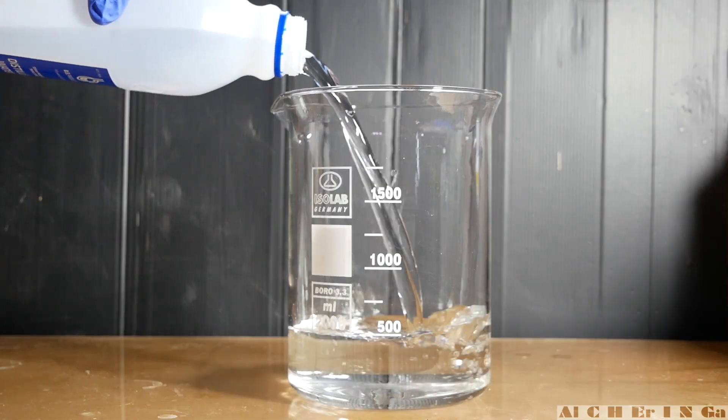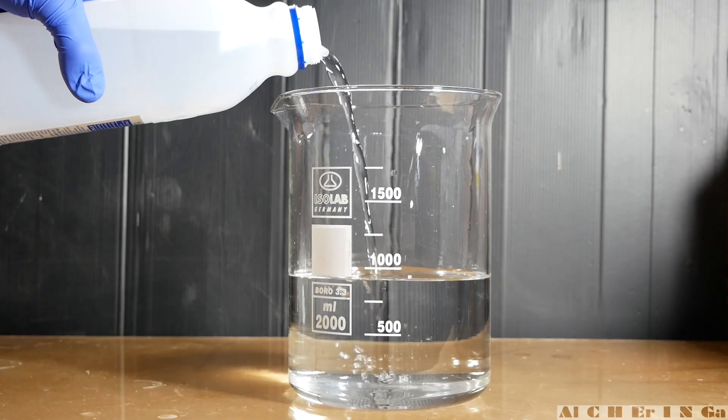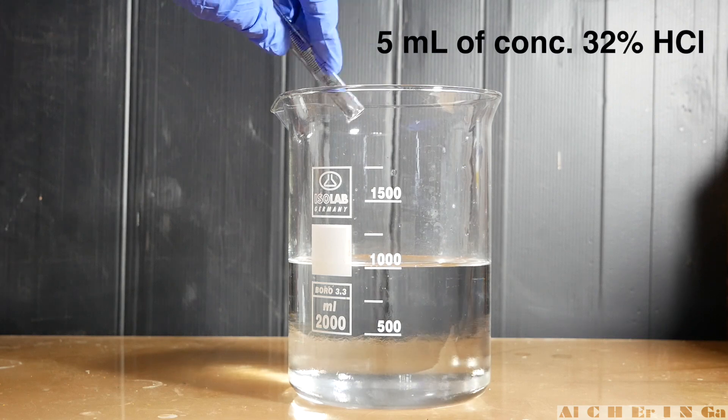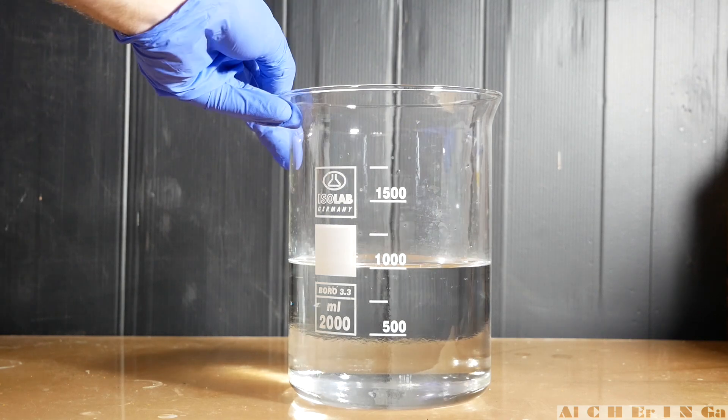Okay now, get a beaker and pour in 1 liter of distilled water. To it, add 5 milliliters of concentrated 32% hydrochloric acid, swirl the solution.